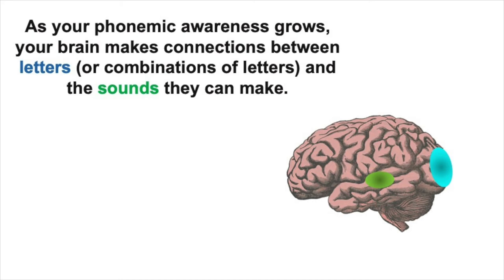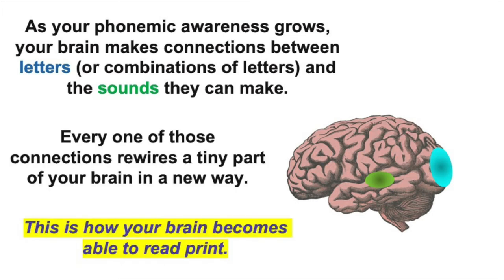Think about young children around 2-4 years old starting to learn the letters of the alphabet. They may not be decoding print just yet, but as their phonemic awareness grows, the brain makes connections between seeing letters or combinations of letters as patterns and hearing the sounds that they make. Every one of those connections rewires a tiny part of the brain in a new way that wasn't there before. This is how your brain becomes able to read print. It's not the same as reading fluently or reading for meaning. Children learn to do that at school and with a lot of practice. But without those connections or orthographic maps, reading fluently or reading for meaning aren't possible.